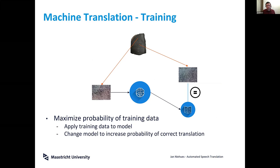What you then do is compare your translation with the reference. You try to make the model give a high probability to the sentence most similar to the reference. You compare your translation with the reference translation and adjust your model so it now assigns high probability to the reference translation.